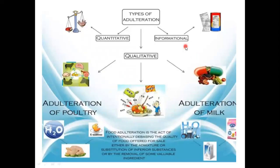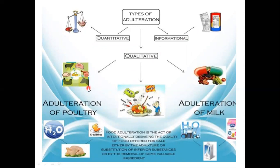Adulteration is classified into quantitative adulteration, qualitative adulteration, and informational adulteration. Quantitative adulteration refers to short weight or quantity. Informational adulteration is where different information is given on the packaging material but the inner product is different. Qualitative adulteration is where inferior quality substance is mixed into a superior quality product.